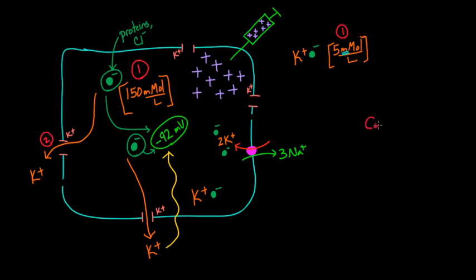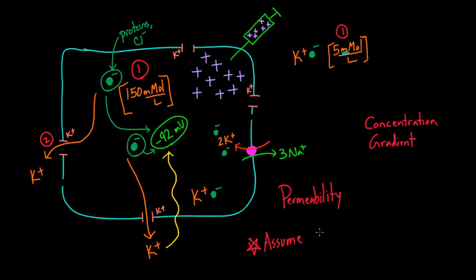So let me hammer this point harder here by showing you a little diagram. Let's say we have a concentration gradient over here, and I also have permeability over here. Permeability to potassium. And assuming that we only have permeability, so I'll write that very clearly, only the cell is only permeable to one ion. Only one ion. So assume only one ion for this permeability.